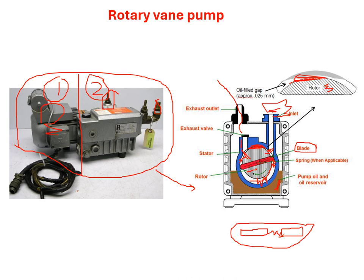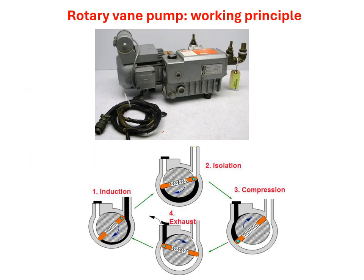Now let's see how this pump actually creates the vacuum. This is done in multiple stages — here you can see four stages. The first stage is induction: the inlet is connected to the chamber and all the gases come through this inlet inside the pump. As the blade moves, these gases also move inside. The second stage is isolation: the blade is now in a position where the gases that came inside are separated from the inlet.